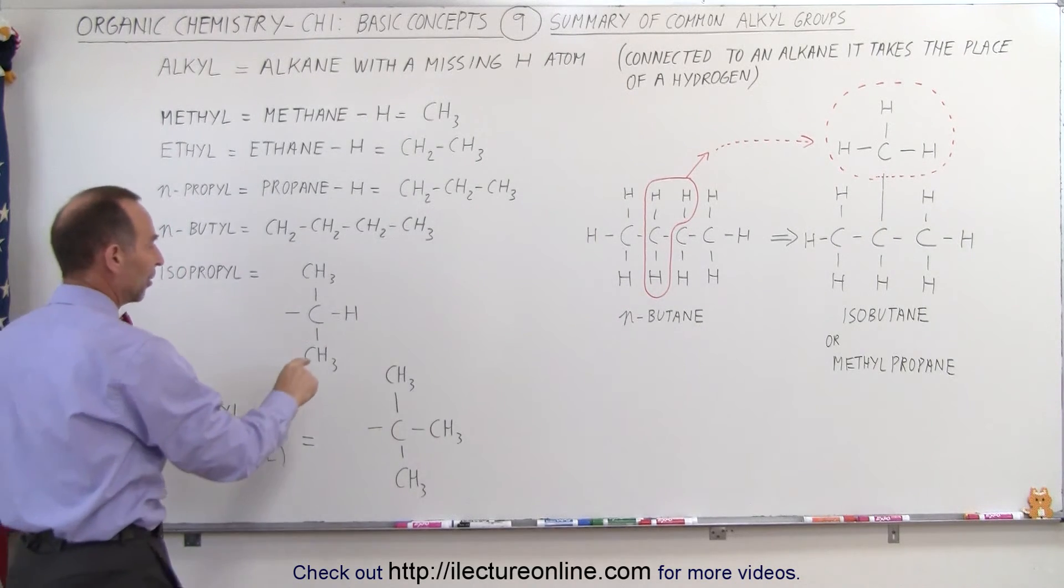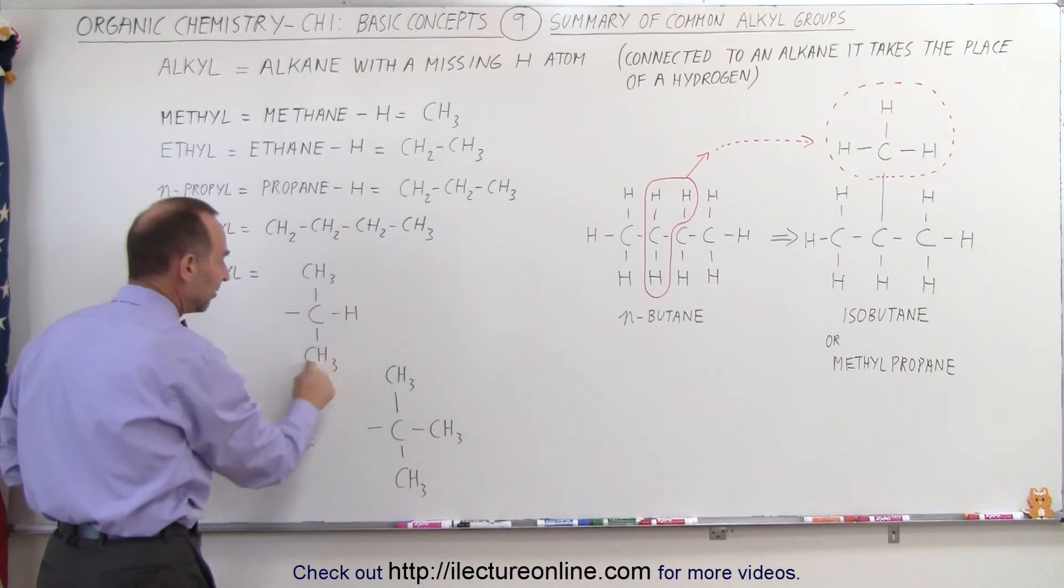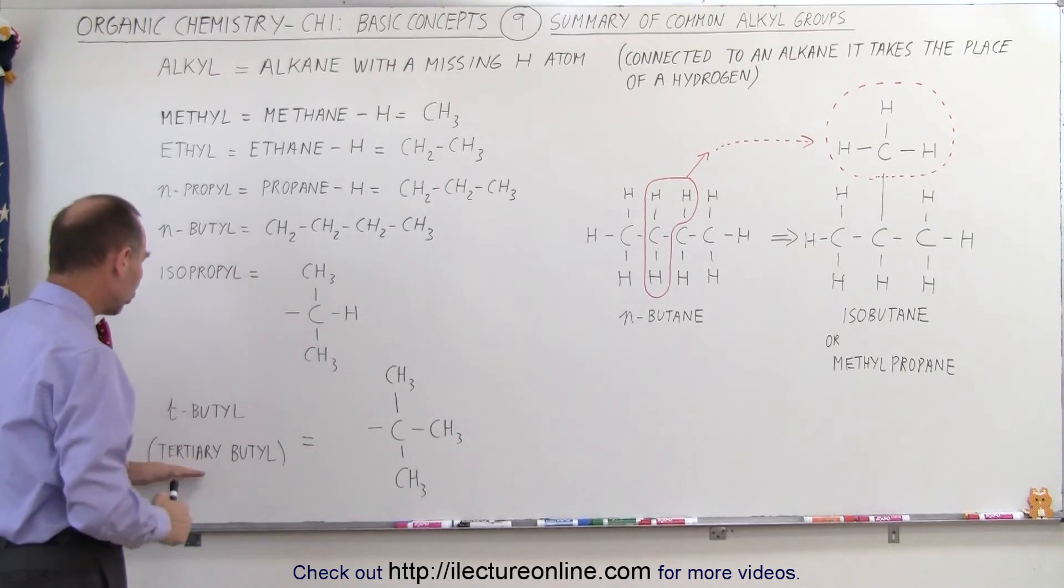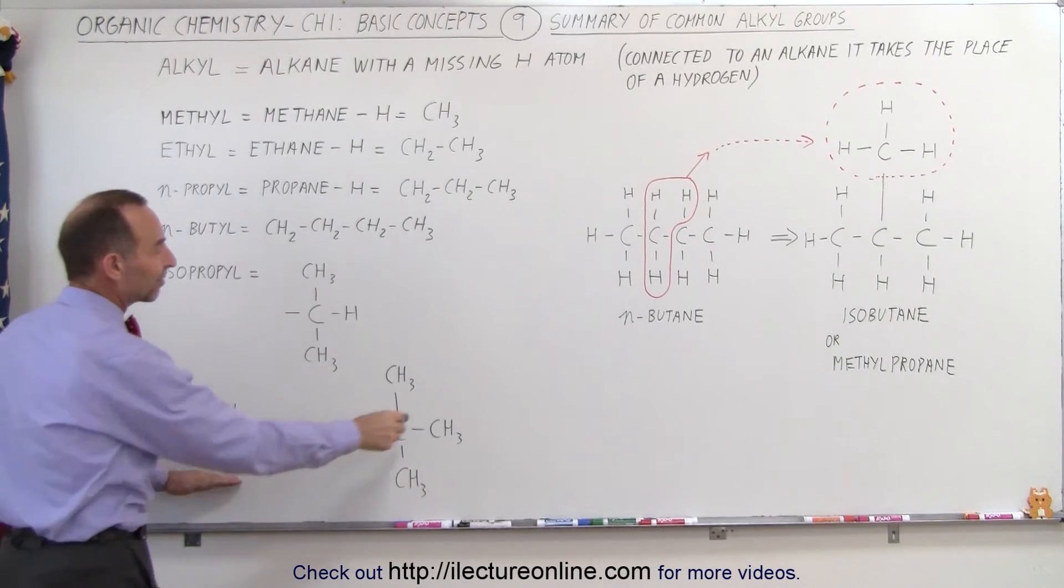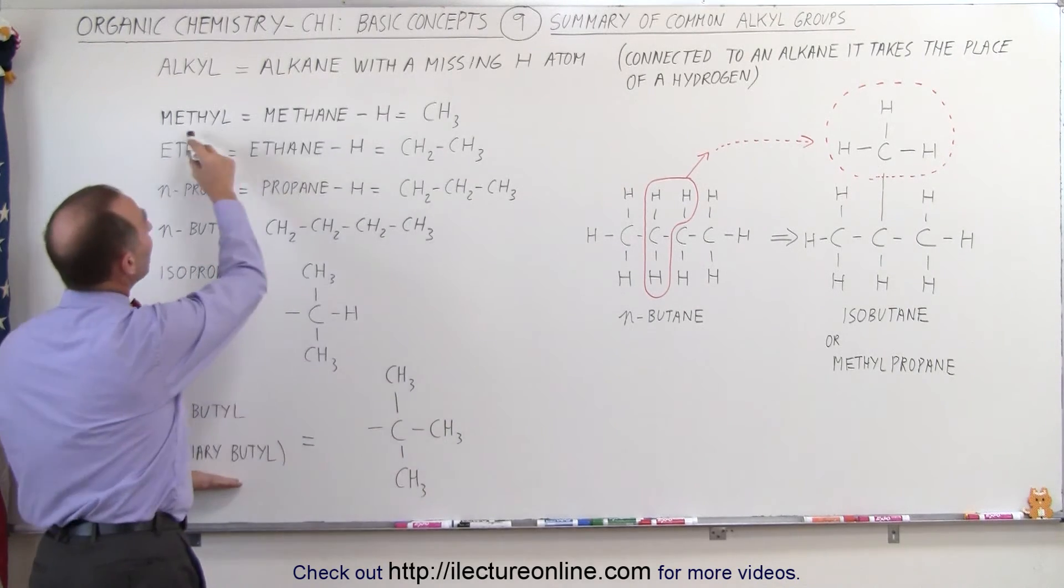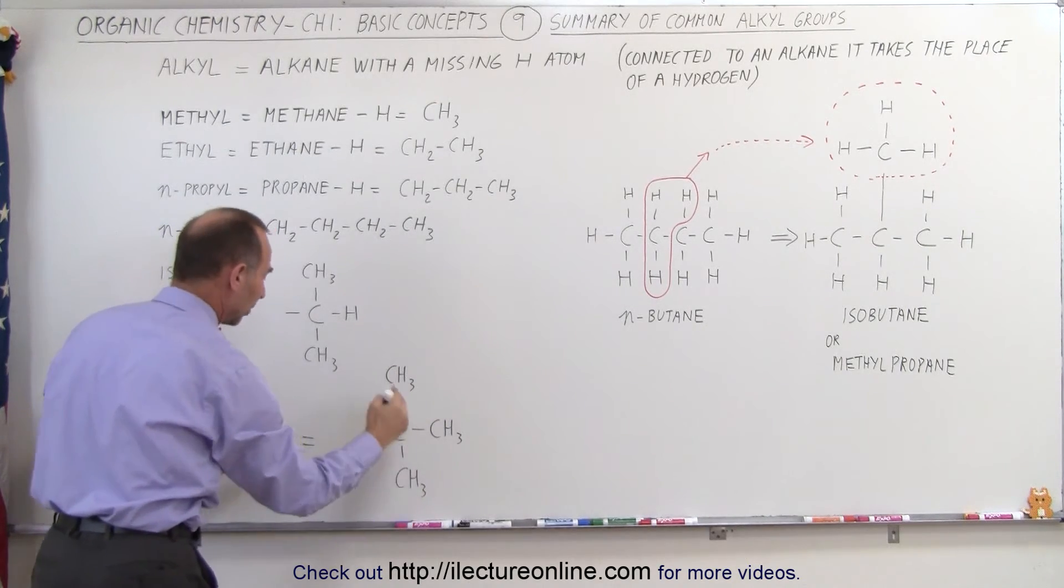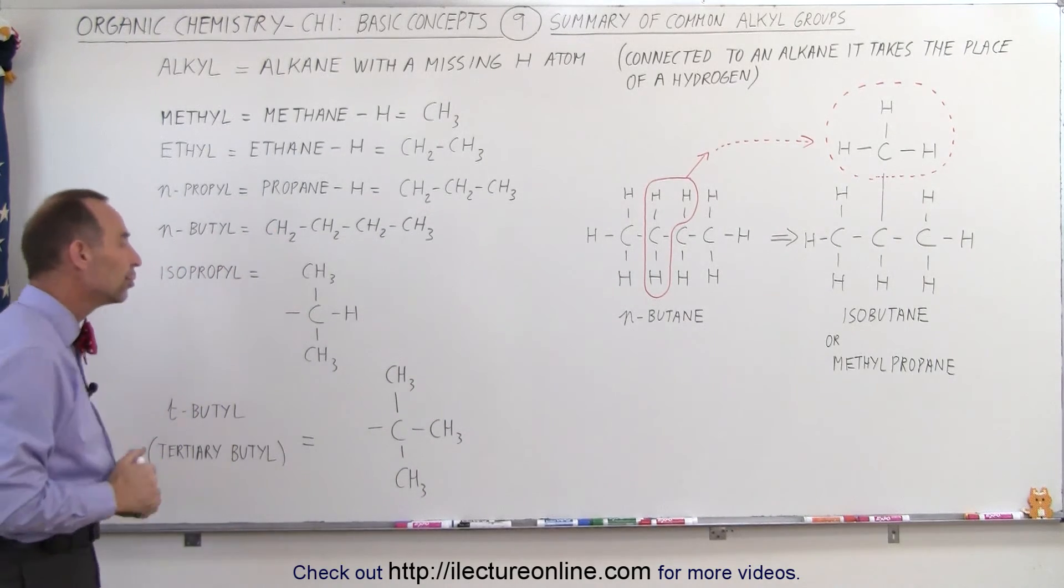And if we have a carbon like this with three CH3s, like we do in this case, that is called t-butyl for tertiary butyl, because it has three methyl groups connected to the single carbon, which together forms another group called the t-butyl group.